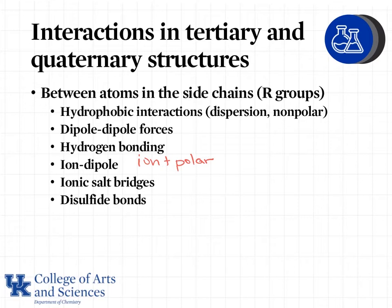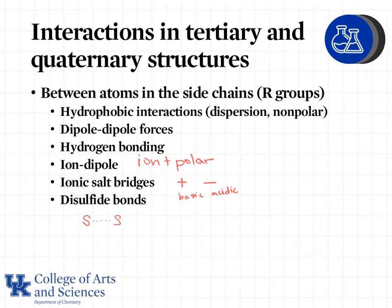We can also see ionic salt bridges, which are basically a positively charged ion and a negatively charged ion being attracted to one another. This is often our basic (positive) and acidic (negative) amino acids — those are typically the ones that form ionic salt bridges. One that's new to us is a disulfide bond, and not surprisingly, this interaction occurs between two sulfur atoms, hence the name disulfide.